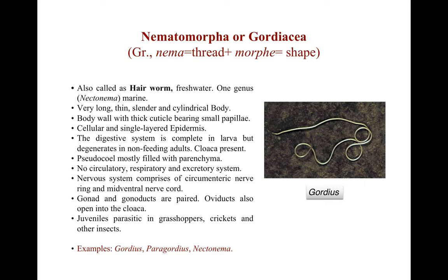There is no circulatory, no respiratory, and no excretory system. The nervous system consists of a circumesophageal nerve ring and a mid-ventral nerve cord. Gonads and gonoducts are present and the oviduct opens into the cloaca. The juvenile is parasitic in grasshoppers, crickets and other insects. Examples are Gordius, Parachordodes, and Nectonema.